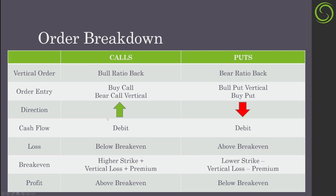For the bullish back ratio you're obviously looking for a bullish direction, and the cash flow is traditionally a debit. The loss is anything below the break-even, and the break-even is the higher strike plus the vertical loss plus the premium. Profit is anything above the break-even. For the bearish back ratio, we're looking for a bearish direction — again traditionally a debit. Loss is above the break-even; break-even is the lower strike minus the vertical loss minus the premium; profit is anything below the break-even by expiration.